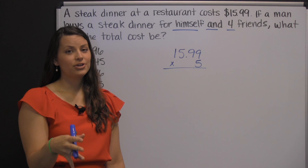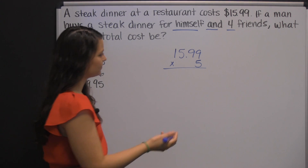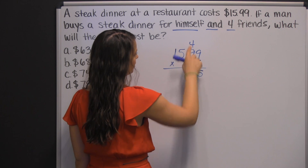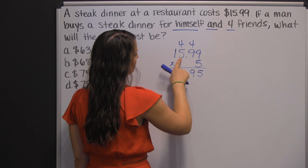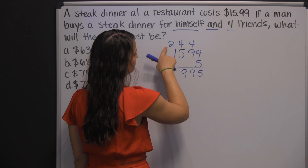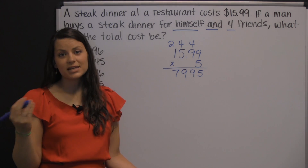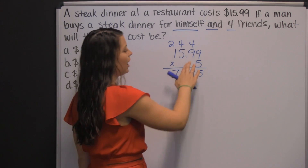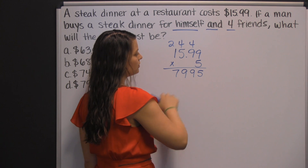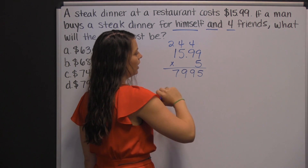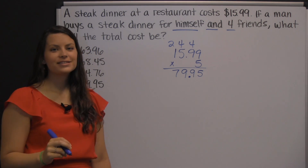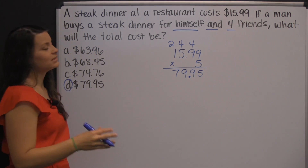Since you don't get to use a calculator, you need to be prepared to multiply by hand. Five times nine is forty-five. Five times nine is forty-five, plus four is forty-nine. And five times one is five, plus two is seven. Where does the decimal go? When multiplying decimals, you count how many numbers are behind the decimals in your factors and put that many numbers behind the decimal in your product. There are only two numbers behind this decimal, so my product needs two numbers behind the decimal. It's going to cost $79.95, which would be answer D.